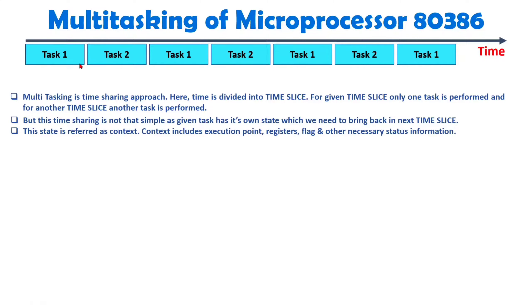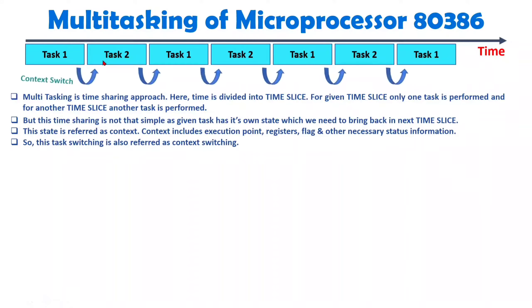Here we are jumping from one context of a task to another context of a task. Task one is completed in its given time slice, after which we need to reload the context of task two. Once task two is completed, we jump back to task one, and we need to reload the context of task one. This process is called context switching — task switching is also referred to as context switching. How we can have context switching is quite interesting in the 80386.